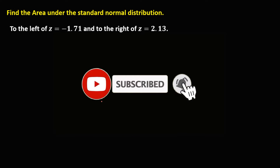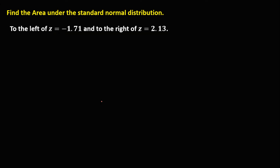Welcome to MathStorya. Let's have this problem: find the area under the standard normal distribution. We are given two conditions: to the left or below Z equals negative 1.71, and to the right or above Z equals positive 2.13.